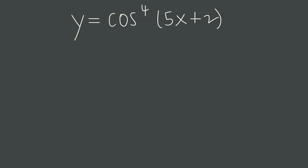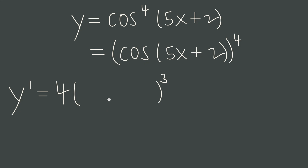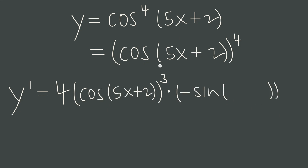Let's do one more example with a higher-order trig function, because they can get a little confusing. When we have a trig function raised to some higher-order exponent — something greater than 1 — we'll sometimes see it written with the exponent attached to the trig function. We have to remember that this is exactly the same as pulling the exponent out to the end, wrapping the trig function and its argument in parentheses, and raising that to the same power. Written this way, it looks like a power function. The something-to-the-fourth-power is the outside function; cosine of 5x plus 2 is the inside function. We differentiate the outside by bringing the exponent down in front and subtracting one — that's power rule — and leave the inside function completely untouched. Then we multiply by the derivative of that inside function.